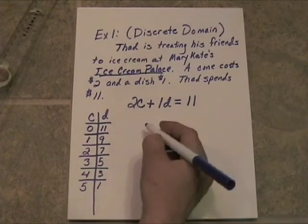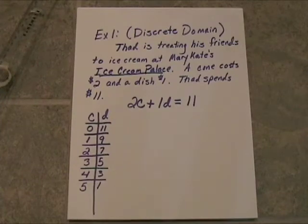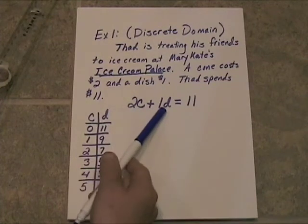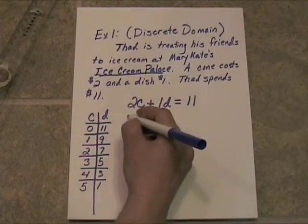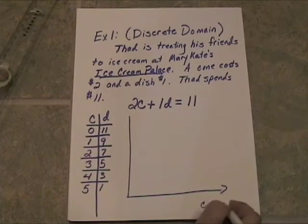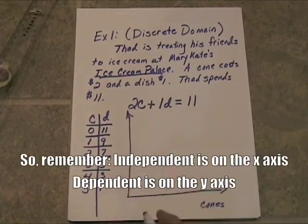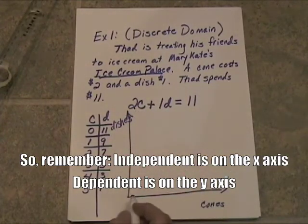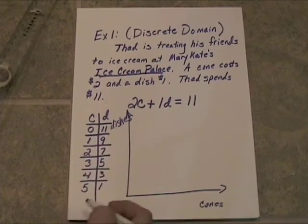Now, what is this discrete graph going to look like? It's all going to be in the first quadrant. Remember, your independent variable goes first — C determined how many D's there were going to be — so we'll put cones on the x-axis. Cones is the independent variable, and dishes goes on the y-axis as the dependent variable. Dishes need to go up to 11, but cones only needs to go to 5.